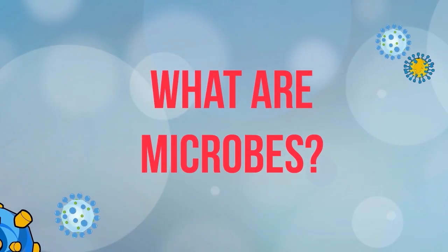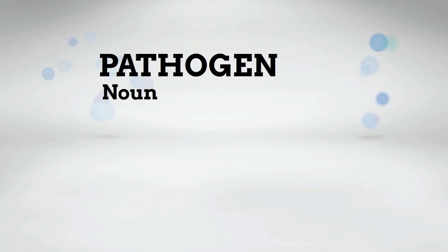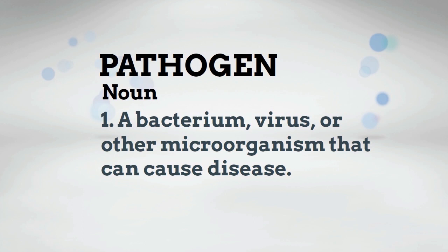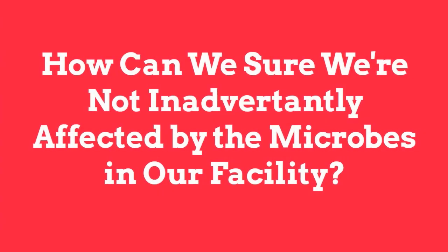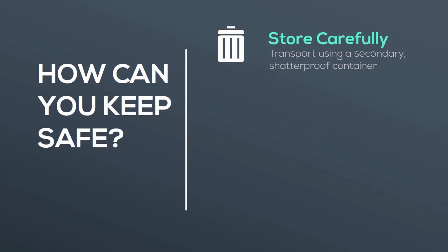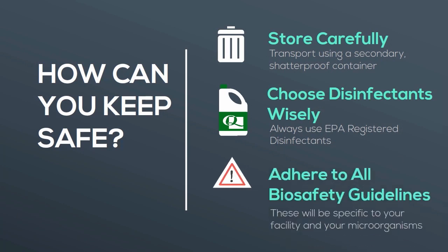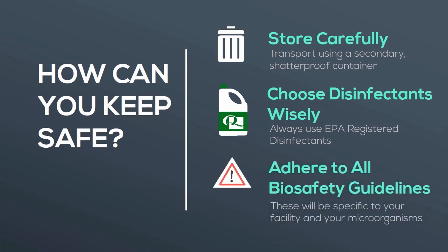Let's move on to microbes. Microbes are things like bacteria and viruses that are too small to see with the naked eye, and they exist on every surface and in every environment on earth. At Quiplabs you'll often hear us refer to pathogens, which are just microbes that can cause diseases. To keep ourselves safe, we need to be careful when storing and transporting biological materials, using secondary shatterproof containers where necessary, using EPA-registered disinfectants and sterilants with label claims for the specific bacteria and viruses we're targeting, and adhering to all biosafety protocols required for our facility.